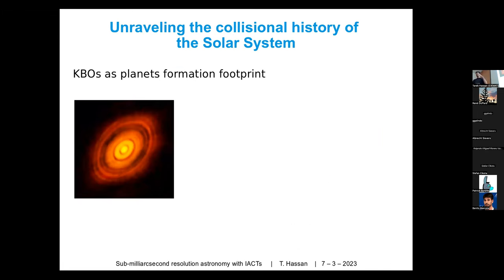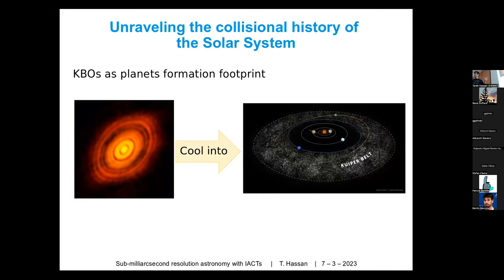The ERC grant I just received plans to exploit this millisecond sensitivity for another scientific objective. Asteroid occultations may be very interesting when observing Kuiper Belt objects — the remnants of protoplanetary disks we see imaged by ALMA. When these systems cool down and evolve, we see something similar to our own solar system. Kuiper Belt objects did not undergo the same collisional history as inner solar system asteroids, so by studying them we may infer how planets were formed and how planetesimals gathered material.